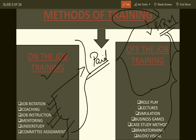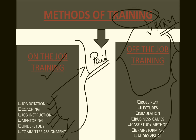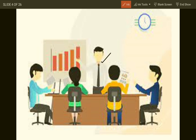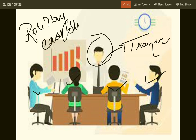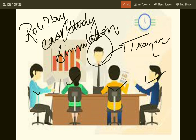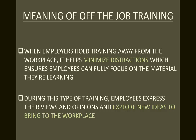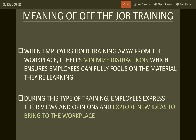In off-the-job training, employees are taken away from the workplace and given training by a trainer using different methods. As shown here, this is the trainer and these are the trainees. Different methods include role play, case study, simulation, and business games, which we're going to discuss in depth.